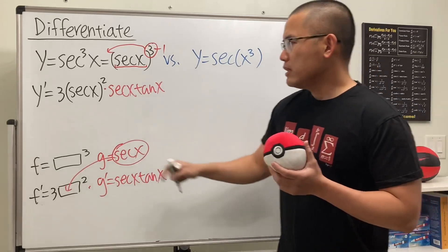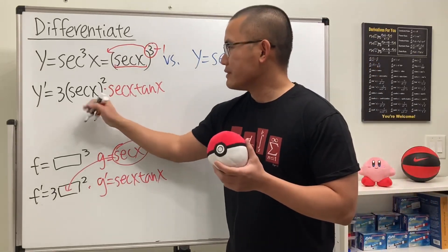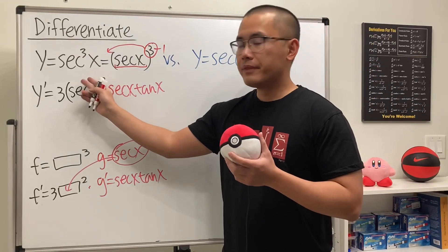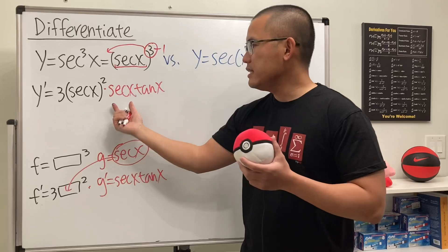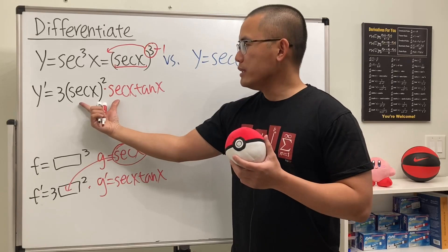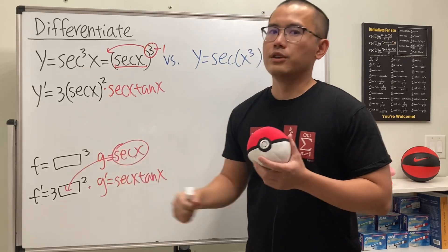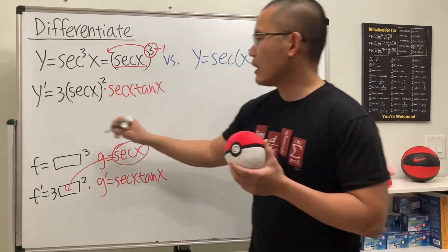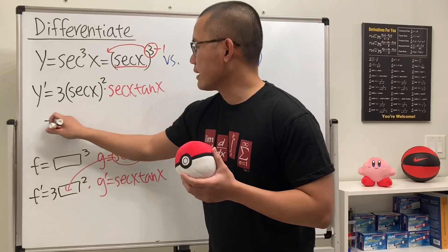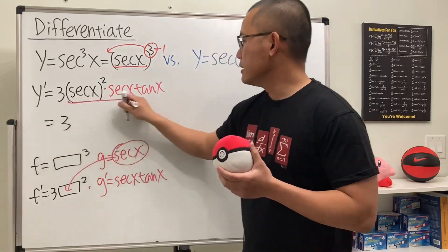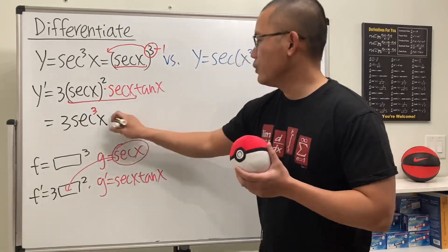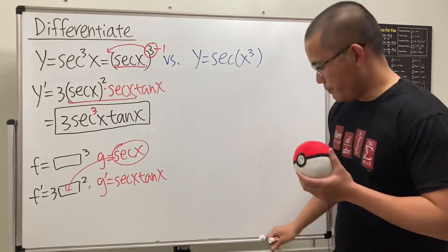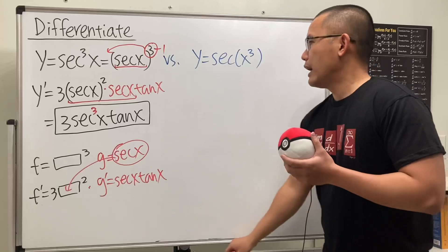Notice that we have secant to the second power times another secant, so all together that is just secant to the third power. We can simplify and write the final answer as 3 secant cubed x tangent x.